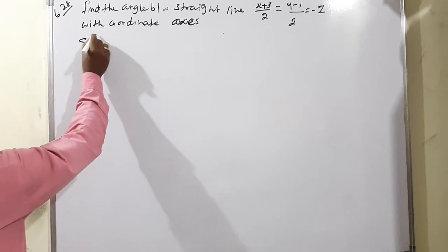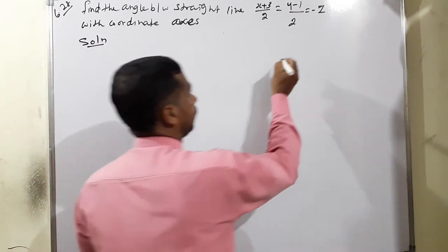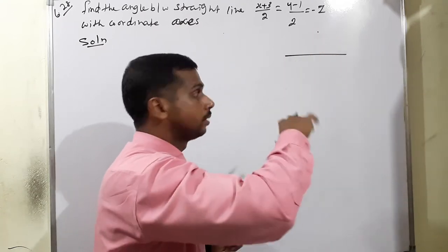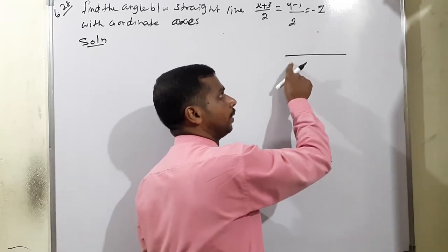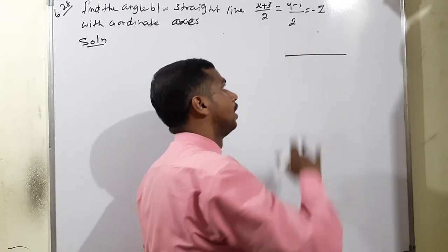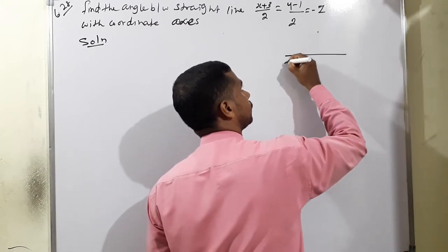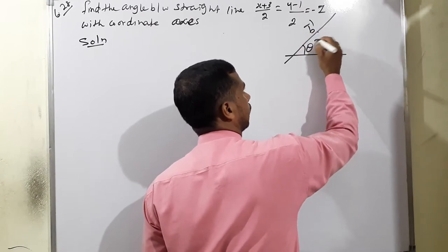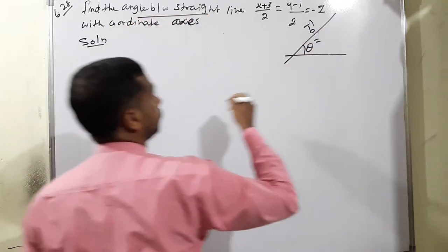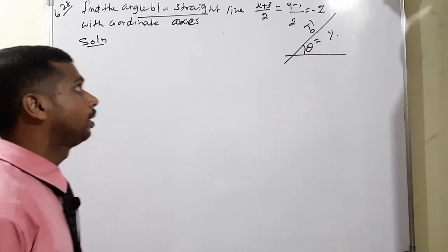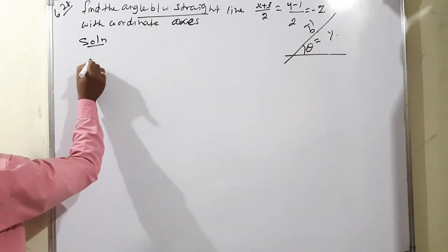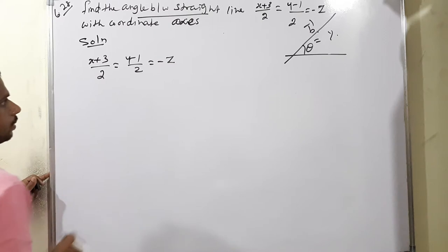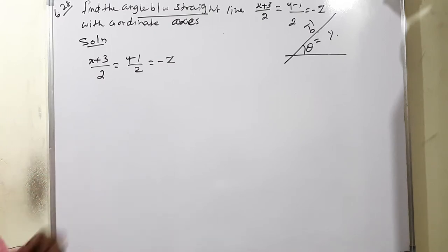Solution. We have one line. There is nothing to show where it is passing through, whether the x-axis or another axis. But when a point is passing through one line, then only we can consider the B vector — this is the angle, because the condition is to find the angle between the straight line. So, the given condition is: x plus 3 by 2 equals y minus 1 by 2 equals negative z. First, we need to find the B vector.